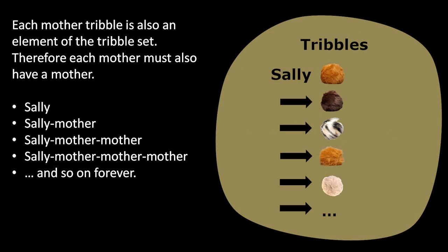Now you'll notice that the mother trible, being a trible herself, must also satisfy the properties of being a trible. So for any mother to some trible, there is also another mother to that trible as well. And if we visualize this relationship, we immediately see that we've defined this sort of never-ending chain of tribles. We begin with Sally, then Sally has a mother, and Sally's mother also has a mother, who then also has a mother, and a mother, mother, mother, and so on forever.